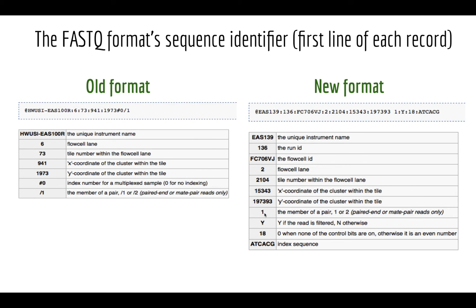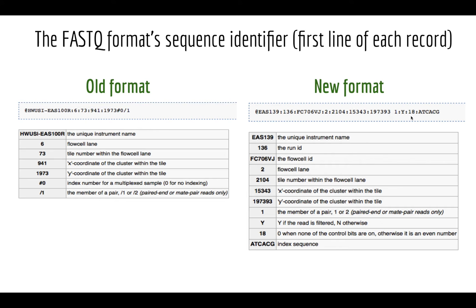The sequence ID also tells you whether the sequence came from the first or second end of a paired-end read — in this case the first 5' end sequenced. If you're barcoding DNA to multiplex multiple samples on one run, the barcode sequence is also included. All this information is concatenated with colons separating each piece.